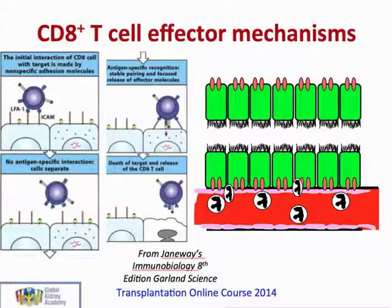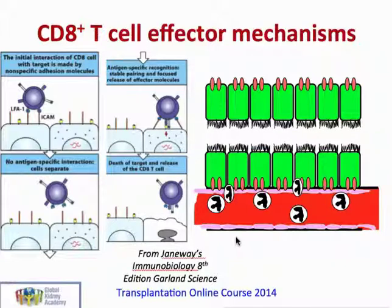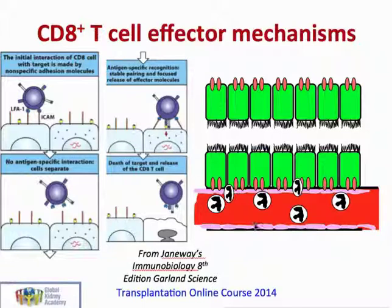CD8 T cells will home back to the graft, where they will interact with adhesion molecules and infiltrate the tissue, seeking out foreign molecules on the surface of cells. This is shown in the diagram on the right, with cytotoxic lymphocytes homing into the blood vessels around the tubular cells of the transplant and infiltrating the cells. If cytotoxic T cells discover allogeneic MHC molecules, they will cause these cells to be destroyed. This is the process thought to underlie tubulitis in the transplant.